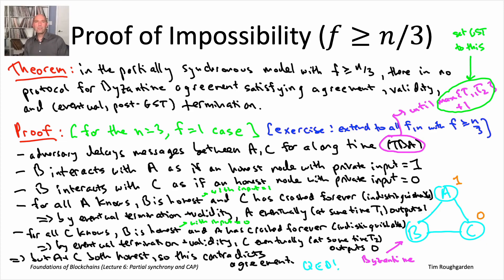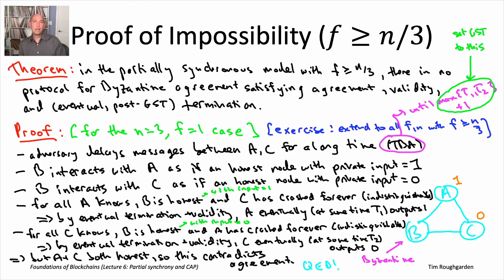We have one more thing to do in lecture six. In the next video we're going to relate the possibility and impossibility results we're seeing in the partially synchronous model to a very famous principle from distributed systems known as the CAP theorem. I'll see you there.